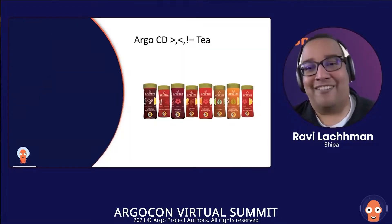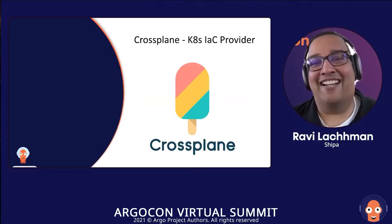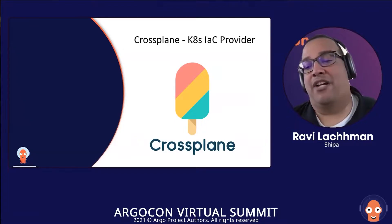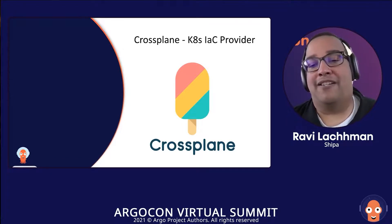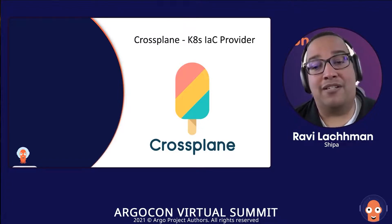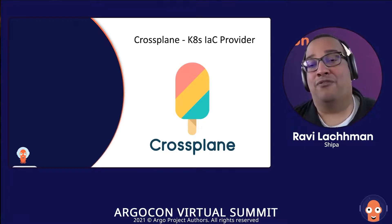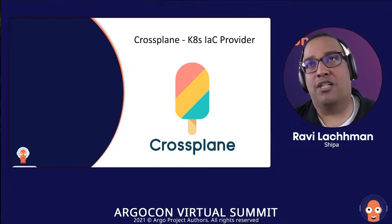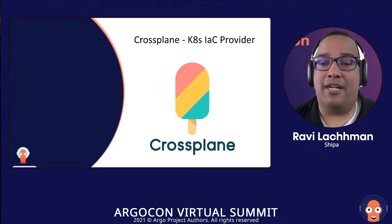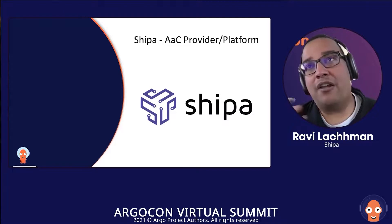Talking about Argo, Crossplane, and Shippa — what are these three tools? Argo CD: at ArgoCon I'll assume you already know what Argo is. Crossplane is a newer tool I'm very excited about — it's a Kubernetes infrastructure-as-code provider. Crossplane is a ubiquitous control plane that gives you the ability to manage items not natively made for Kubernetes. Using kubectl, you can apply a Crossplane resource to manage those resources in a Kubernetes-native way. Shippa is our application-as-code provider.